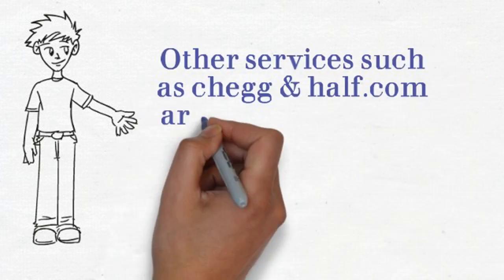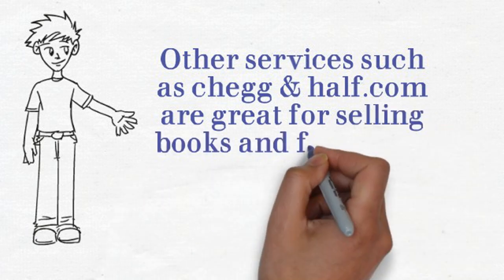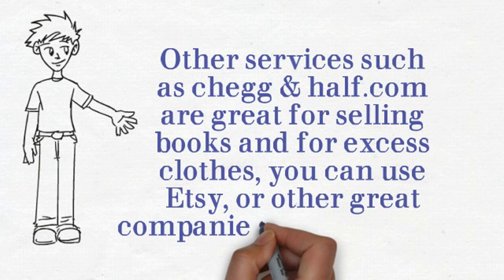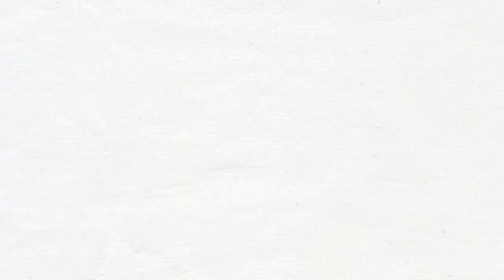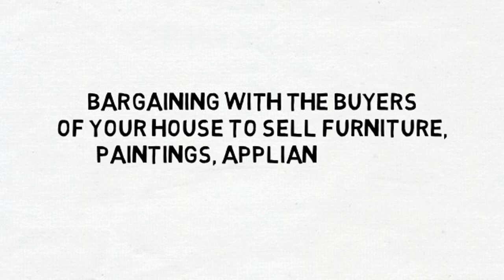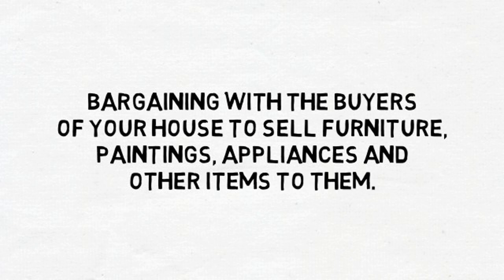Other services such as Chegg and Half.com are great for selling books and for excess clothes, you can use Etsy or other great companies like Threadflip. Another technique we've used here at Otago is bargaining with the buyers of your house to sell furniture, paintings, appliances and other items to them.